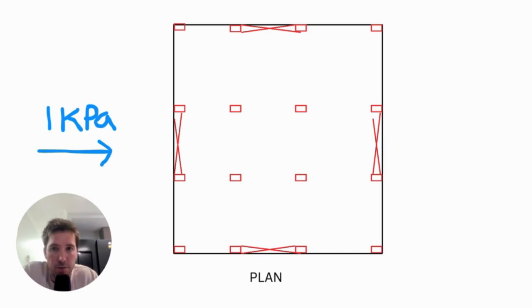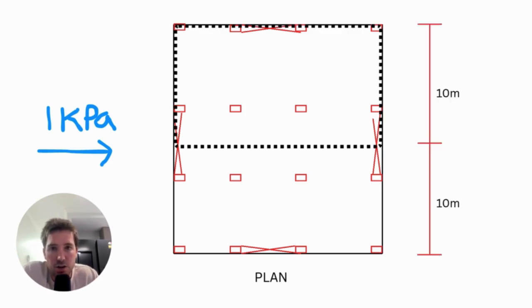So firstly we have to work out what the wind pressure is or the lateral load on our building. Here I've got one kPa on the whole elevation. So the next step is to work out what proportion of that lateral load is going into each of my lateral stability systems or my bracing bays. So the same way you work out tributary areas on columns and beams, it's the same when you're looking at plan view onto your lateral stability elements.